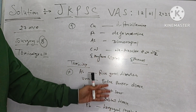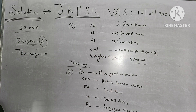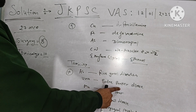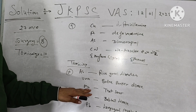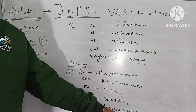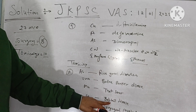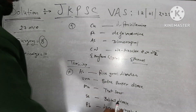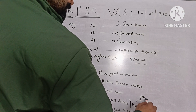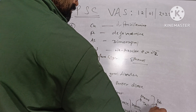Arsenic toxicity presents with rice gruel diarrhea (white rice diarrhea). Urea toxicity is known as bovine bunker disease. Molybdenum toxicity causes teart scour. Lead toxicity causes laryngeal paralysis as a nervous symptom. Selenium toxicity in horses is known as bobtail disease, where hair loss occurs from the mane and tail region, giving a bobbed appearance.